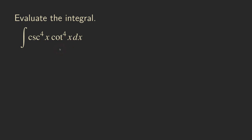How do we do this one? This is actually similar to the situation when we have a product of powers of secant and tangent. The cosecant function takes the place of the secant, and the cotangent function takes the place of the tangent. We are going to be looking for an even power of cosecant or an odd power of cotangent. In this case, the power for the cotangent is even, so that's not going to help us. But the power for the cosecant is also even, and that's good news — if we have an even power here, we can use a basic u-substitution to integrate this function.